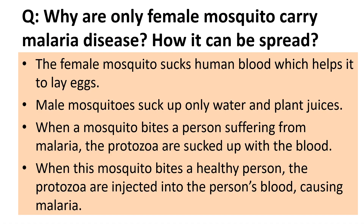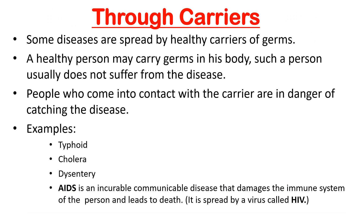You may wonder why only the female mosquito carries malaria. The female mosquito sucks human blood, which helps it to lay eggs, while male mosquitoes suck only water and plant juices. When a mosquito bites a person suffering from malaria, the protozoa are sucked up with the blood, and when this mosquito bites a healthy person, the protozoa are injected into that person's blood, causing malaria.